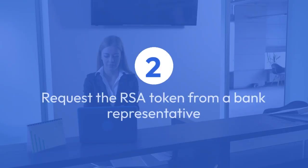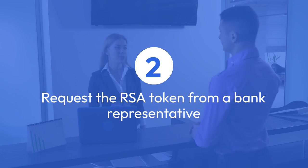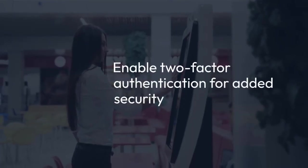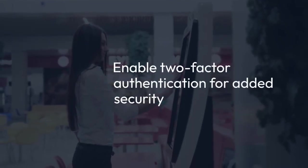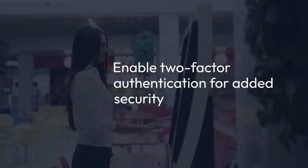At the branch, request the RSA token from a bank representative. Explain that you want to enable two-factor authentication for added security.